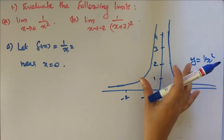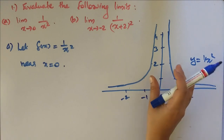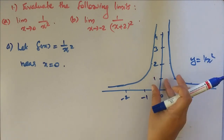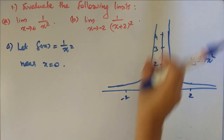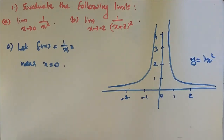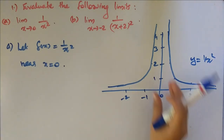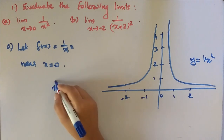Values of x squared are positive and become arbitrarily small. So x squared value is small. Hence the value of f(x) = 1/x² is positive.